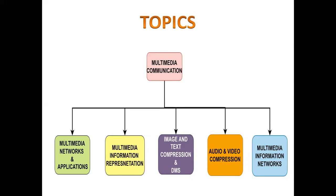In Module 3, we are going to study image and text compression. The four media types — text, image, audio, and video — when transferring through a communication channel, you need to reduce the size of the file. The need for compression is to reduce the size of your file from a higher bit rate so that the multimedia file can be transferred through the communication channel.